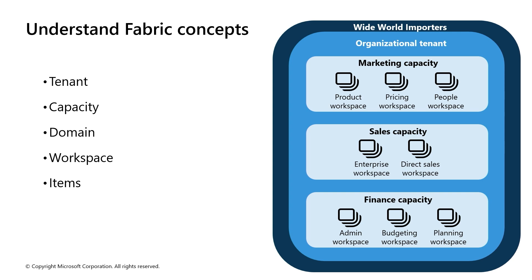There's often a single instance of Fabric for an organization, and it's aligned with Microsoft Entra ID, formerly known as Active Directory. The Fabric tenant maps to the root of OneLake and is at the top level of the hierarchy. Capacity is a dedicated set of resources available at any given time to be used, and a tenant can have one or more capacities associated with it.